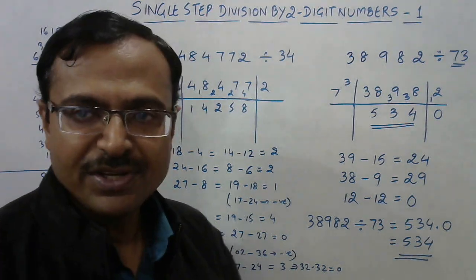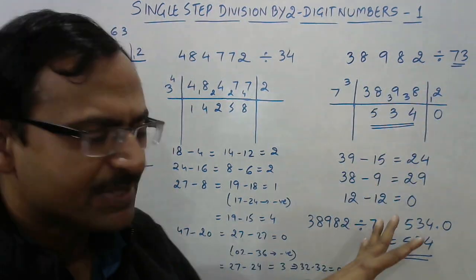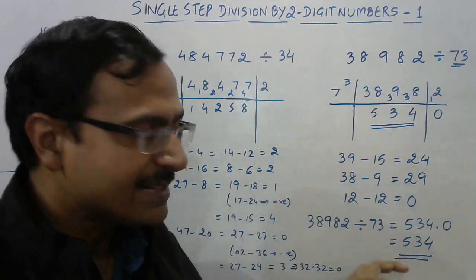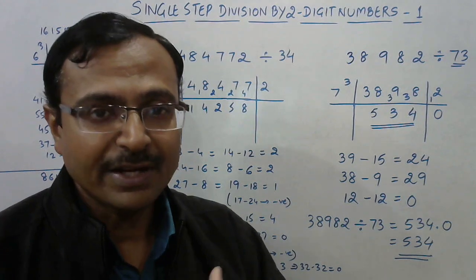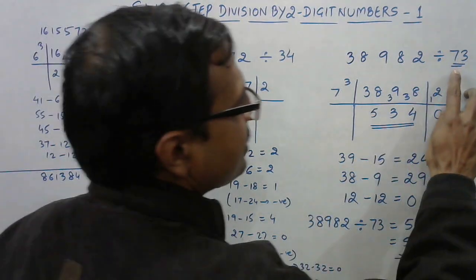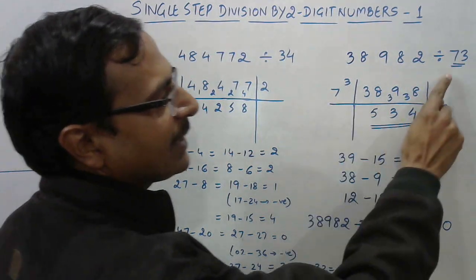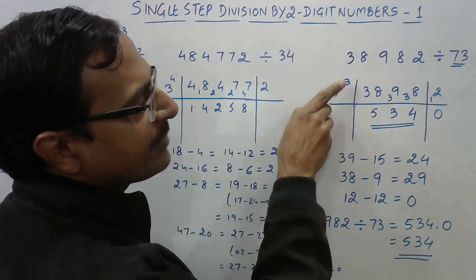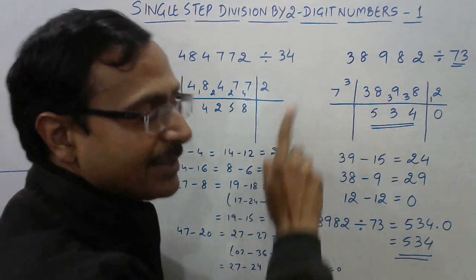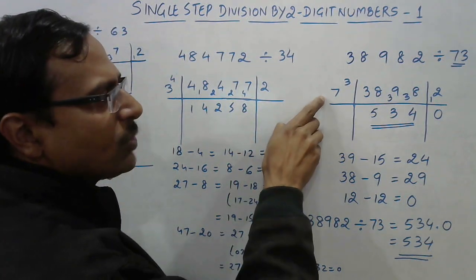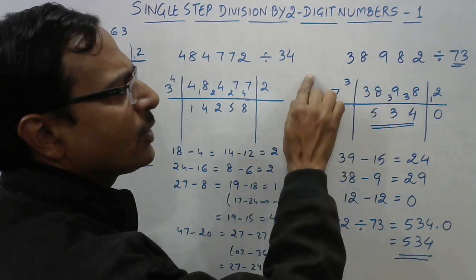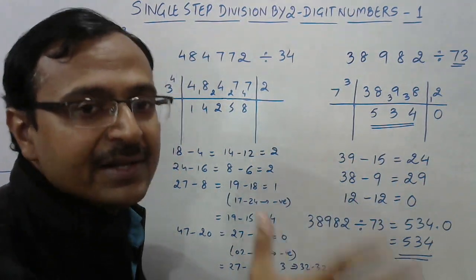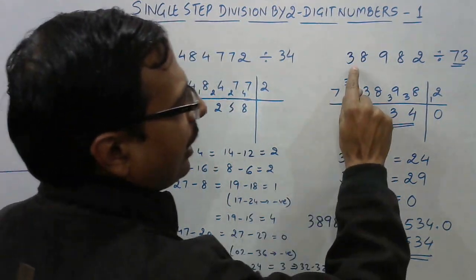The first example is 38982 divided by 73. I have done the steps here so that you don't get confused. Now, this is a two-digit number, so I am writing the first digit — the tens digit — here, and the second digit, the ones digit, is to be written slightly above. Remember, this is not seven raised to the power three; it is just done to separate out seven and three. This three has a different role to play in division than seven.